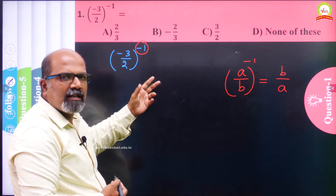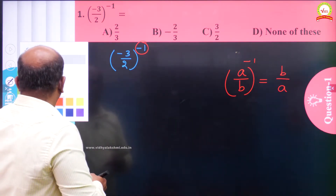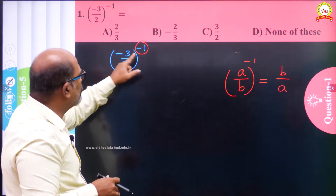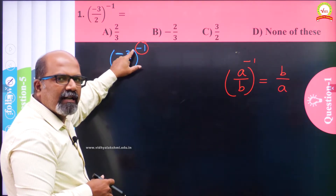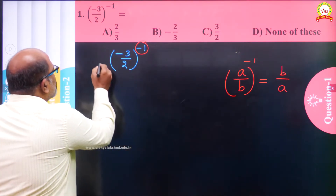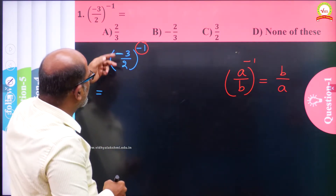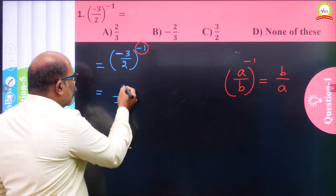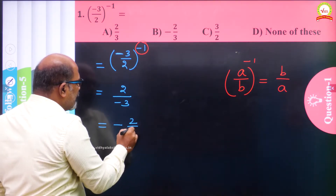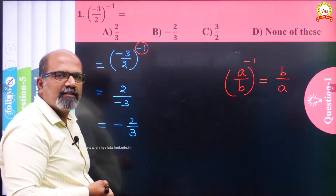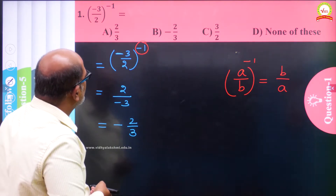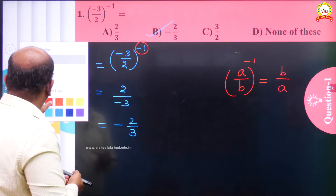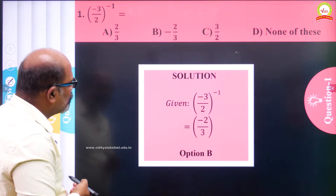It will become 2 by minus 3. Do not worry about the minus sign in the fraction 3/2 — we are concerned only about the negative sign in the exponent. We take the reciprocal of -3/2, which gives us 2/(-3), and 2/(-3) is nothing but -2/3. So -2/3 is the answer for this question, and option B matches our answer.